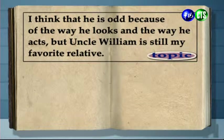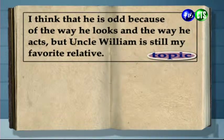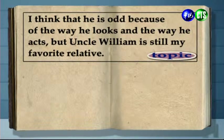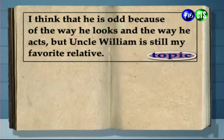Now let's take a look at the thesis statement from the 'My Favorite Relative' essay. 接下來我們用這個「我最喜歡的親戚」這篇文章的主旨陳述來做一個解釋。It says: 'I think that he is odd because of the way he looks and the way he acts, but Uncle William is still my favorite relative.' 我覺得他的行為跟他的外表都很奇怪，但是威廉叔叔仍然是我最喜歡的親戚。